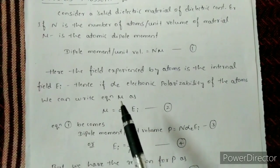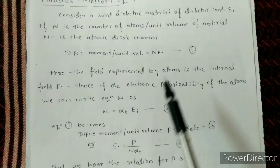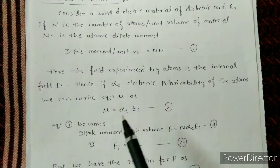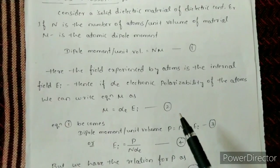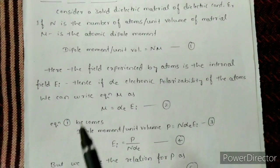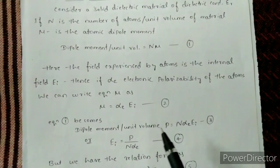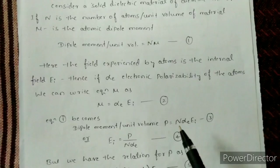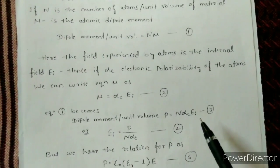We can write the expression for μ as: μ = αE · EI. Substituting this into equation 1, it becomes: dipole moment per unit volume P = N·αE·EI, which we will call equation number 3.